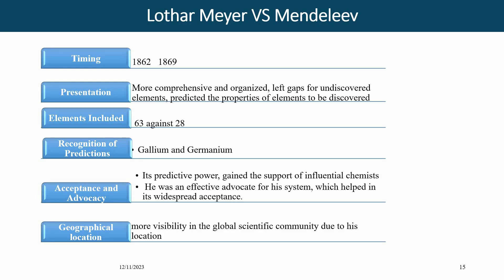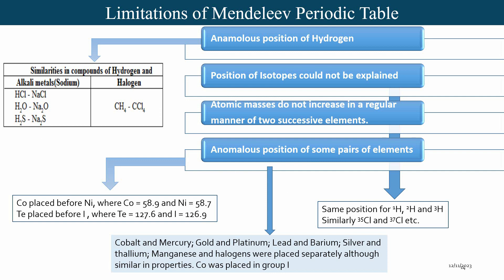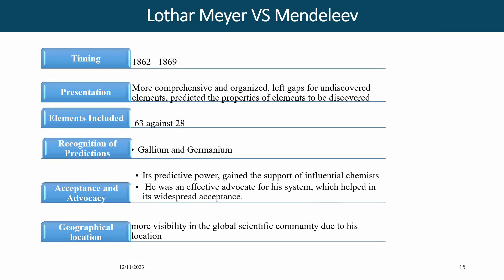Lothar Meyer's and Mendeleev's findings for the formulation of today's periodic table were based on the same principle. Due to the great contribution of Mendeleev, he is called the father of the modern periodic table. However, both Lothar Meyer's and Mendeleev's periodic tables were based on the common principle that periodicity in the properties of elements is based on atomic weight. Some scientists were of the view that Lothar Meyer should be given the title instead of Mendeleev.